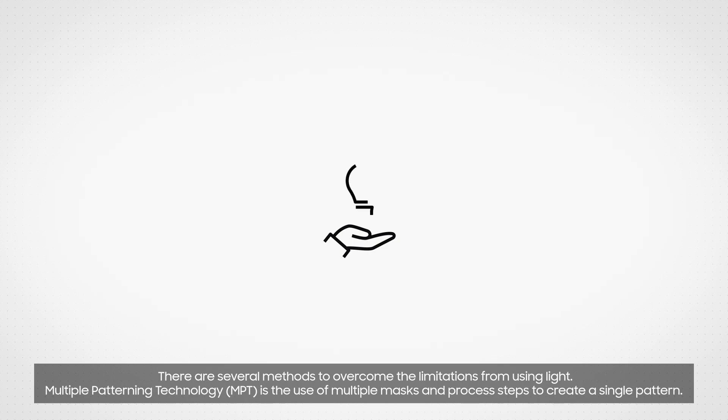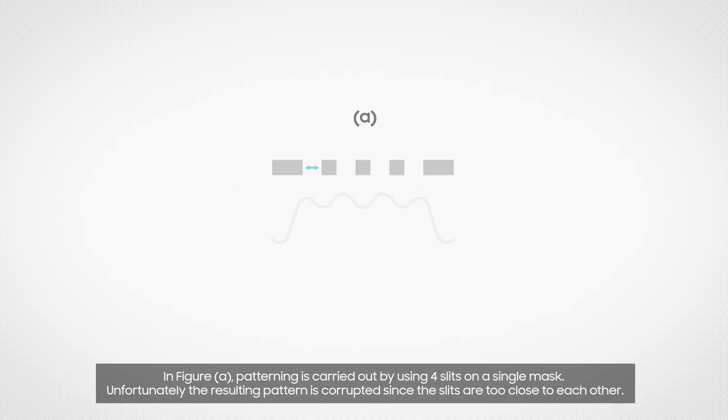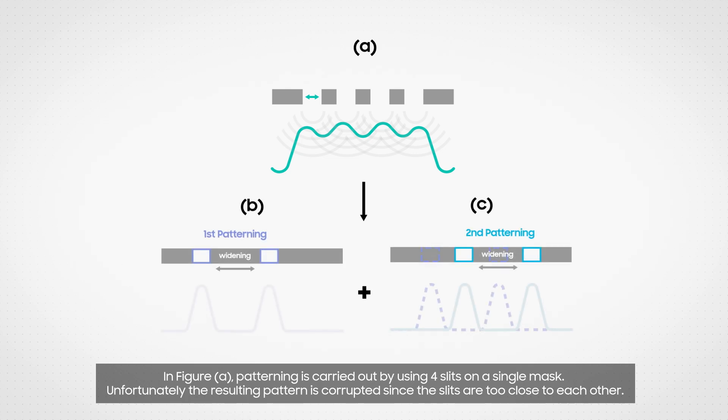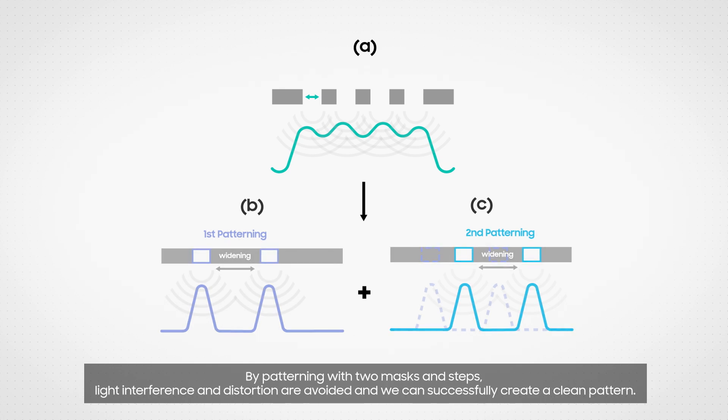There are several methods to overcome the limitations from using light. Multiple Patterning Technology is the use of multiple masks and process steps to create a single pattern. In figure A, patterning is carried out by using four slits on a single mask. Unfortunately, the resulting pattern is corrupted since the slits are too close to each other. With MPT, two masks are used to create the pattern as shown in figures B and C. The four slits are divided into pairs with a wider space between slits. By patterning with two masks and steps, light interference and distortion are avoided and we can successfully create a clean pattern.